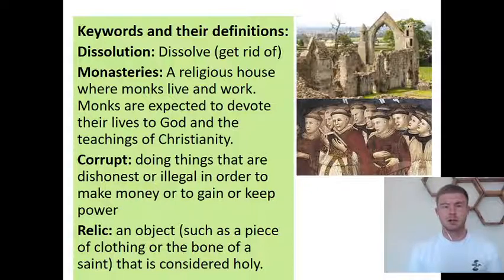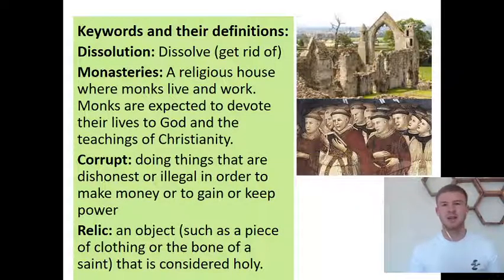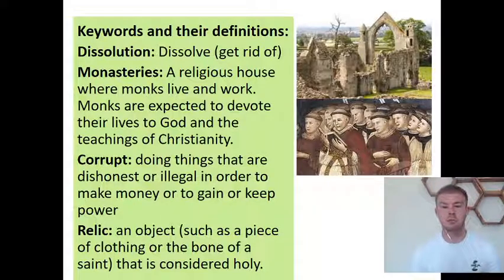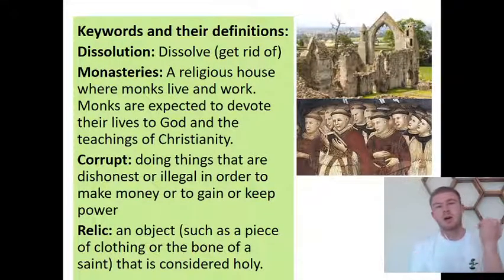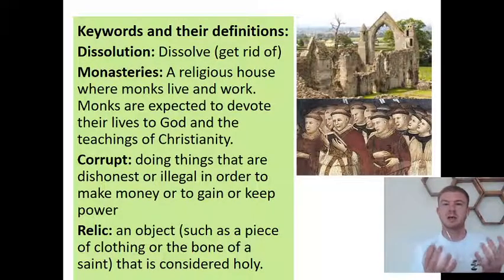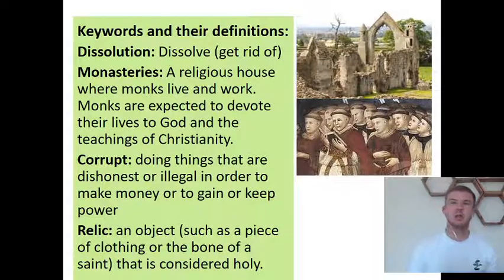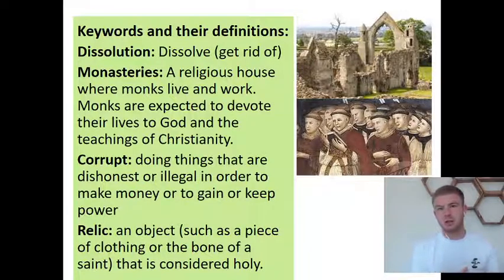Corrupt is our next keyword. If you're corrupt, it means you're doing things that are dishonest or illegal in order to gain something, maybe money or power. This is important because Henry VIII said that the monks had become corrupt. Finally, a relic is an object or a bone of a saint or somebody religious, and it's considered holy — a really special thing to have, and you can receive a blessing from it. At this time, a monastery was seen as really important if it had something belonging to a saint, who would be an important religious figure in Christianity.